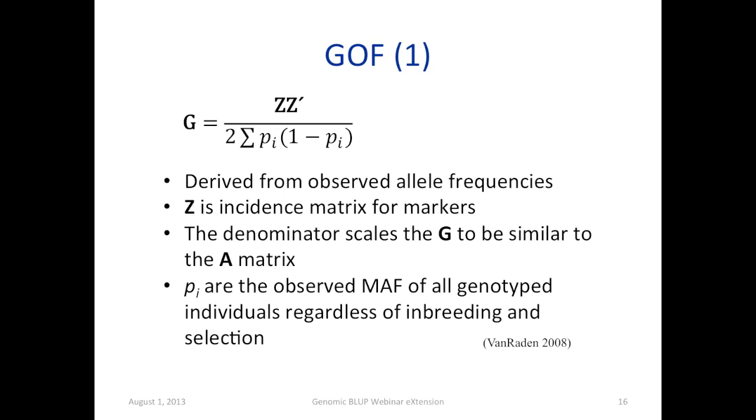And P sub i are the observed minor allele frequencies of all the genotyped individuals, regardless of inbreeding and selection. So this very simple formula, ZZ prime is weighted by the minor allele frequency of observed genotypes.